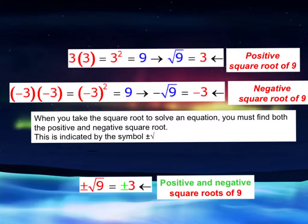I want to remind you that there's an invisible 2 for the index, which means you take out pairs of numbers, and 3 times 3 is a perfect pair. So the square root of 9 is going to equal 3. This is what we call the positive square root of 9.